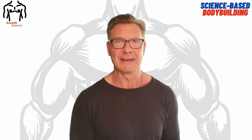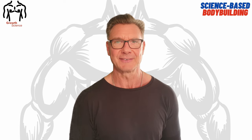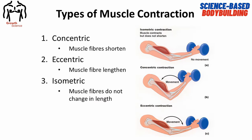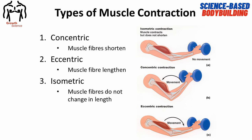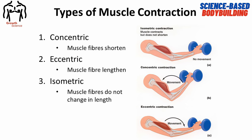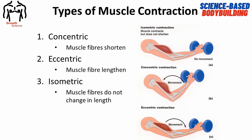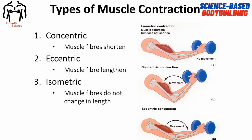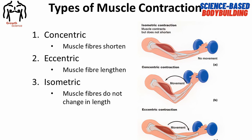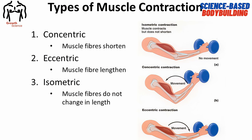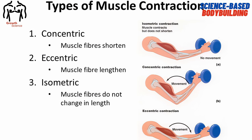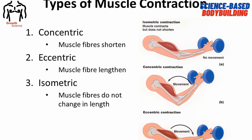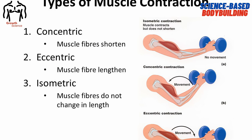An isometric contraction is a contraction without movement. For example, holding your arm at a 90-degree angle at the elbow joint without moving the joint. If you are moving the joint, it's not an isometric contraction — that's called an isotonic contraction.